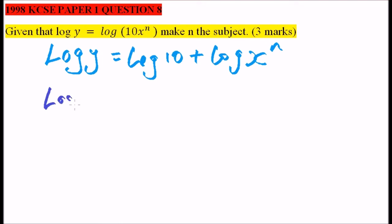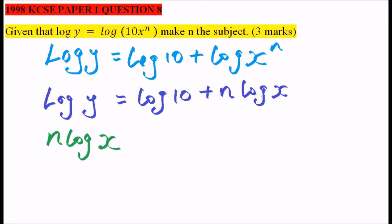We write log y equals log 10. Here we can apply the power logarithm law and write this as n times the logarithm of x. We take log 10 to the other side, so we have n log x, that is this part here, equals when you take log 10 to the other side it becomes negative, so it is log y minus log 10.